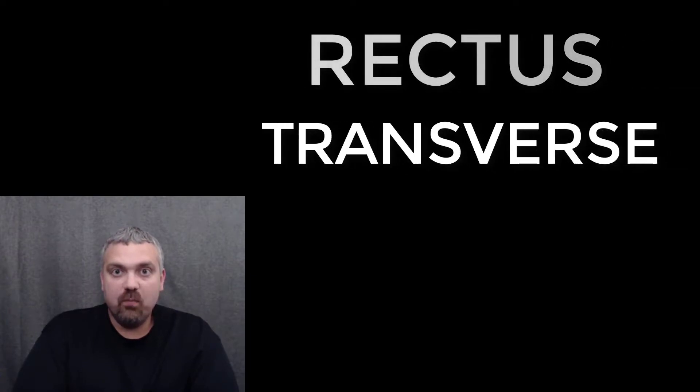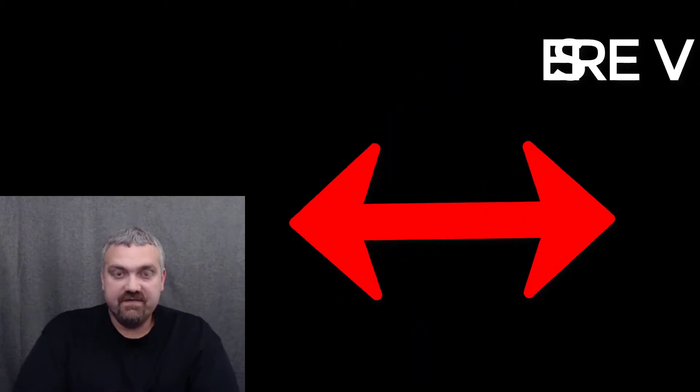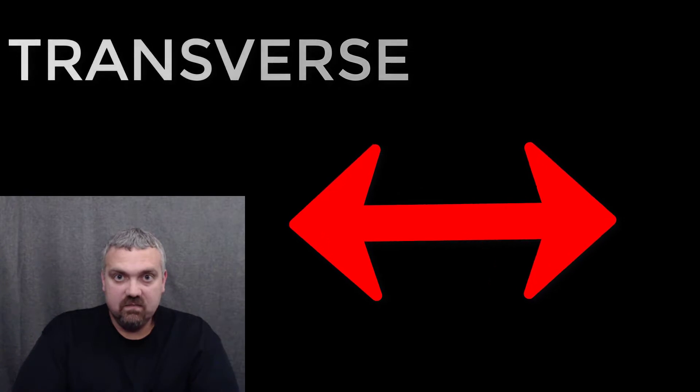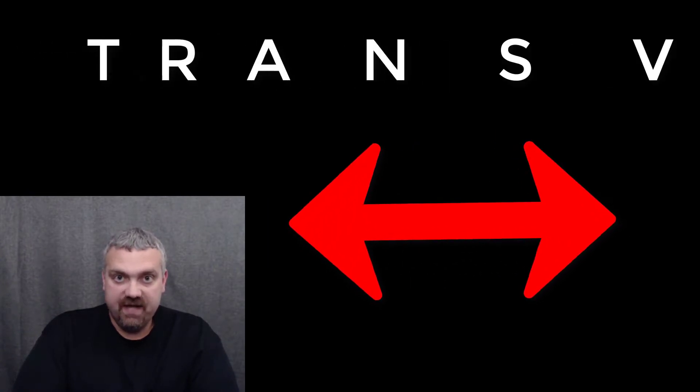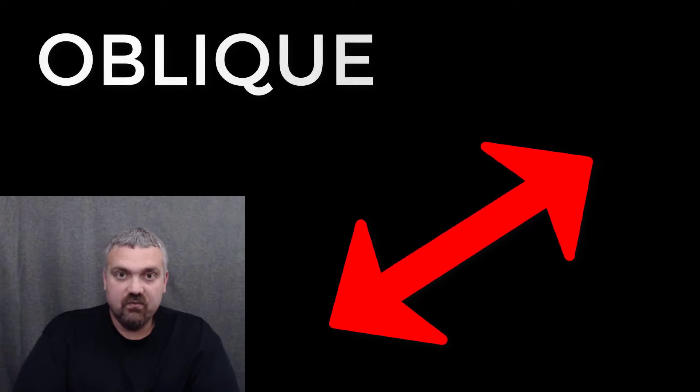I want to start by comparing three directional terms: rectus, transverse, and oblique. Rectus means straight, so think of a muscle running straight up and down. Transverse means crosswise, so think of a muscle running horizontal. And oblique means slanting, so think of a muscle running at an angle. You can find an example of each of these in your core, in your abdomen.